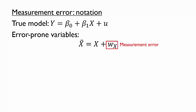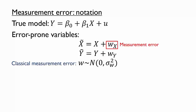We'll also consider measurement error in the dependent variable. Although it's possible for the measurement error w to take on a variety of forms, we'll make a simplifying assumption that the measurement error terms are distributed independently and have a normal distribution with mean zero. When this is true, we call the issue classical measurement error.